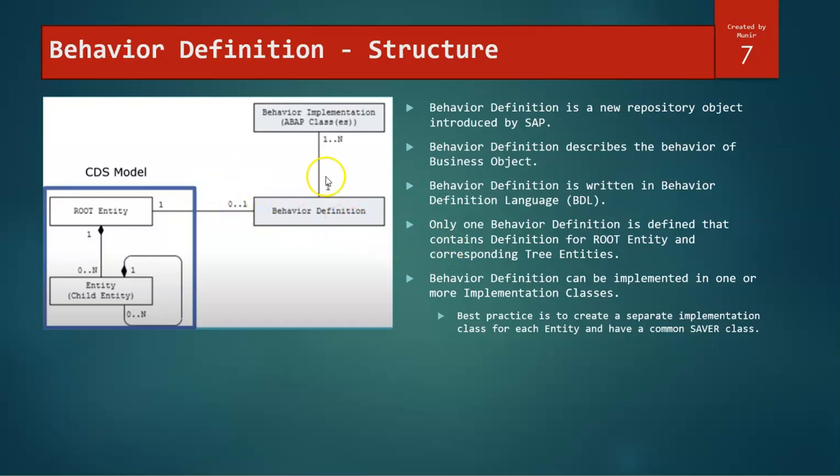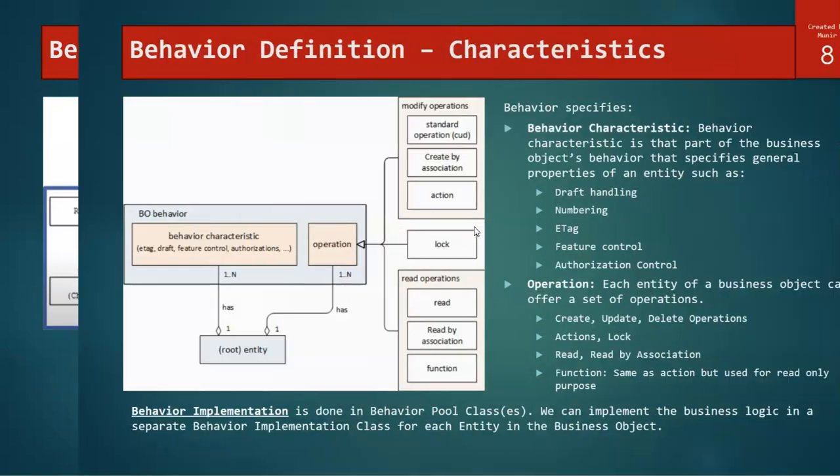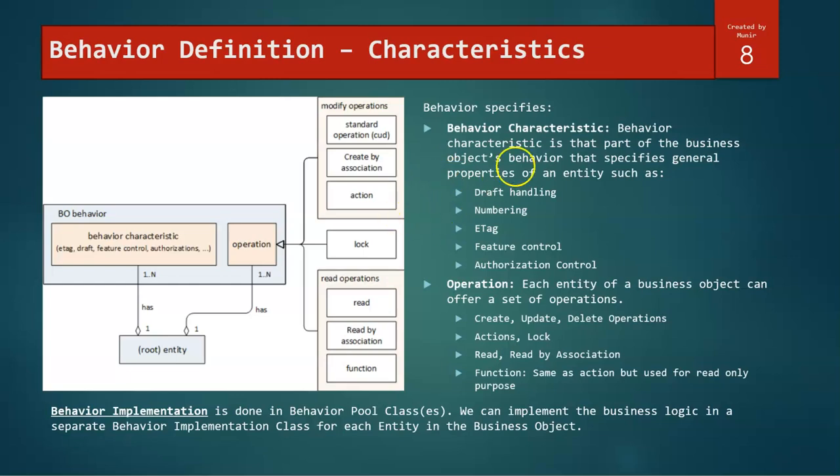This behavior definition, as we have seen, is written in a language called business behavior definition language called BDL. Moving on. Now, what we define in a behavior? Behavior definition will always have certain behavior characteristics. As we have seen, E-tag, Draft, Feature Controls, Authorizations - these are all characteristics that come in with the behavior definition in the RAP framework. And it also has certain operations. The operations are nothing but our create, update, delete operations. We also have a create by association. There are certain actions that you can perform, determinations. Locking is again one operation that has been done. Similarly, we also have a read by association if there is any association, and also some functions.